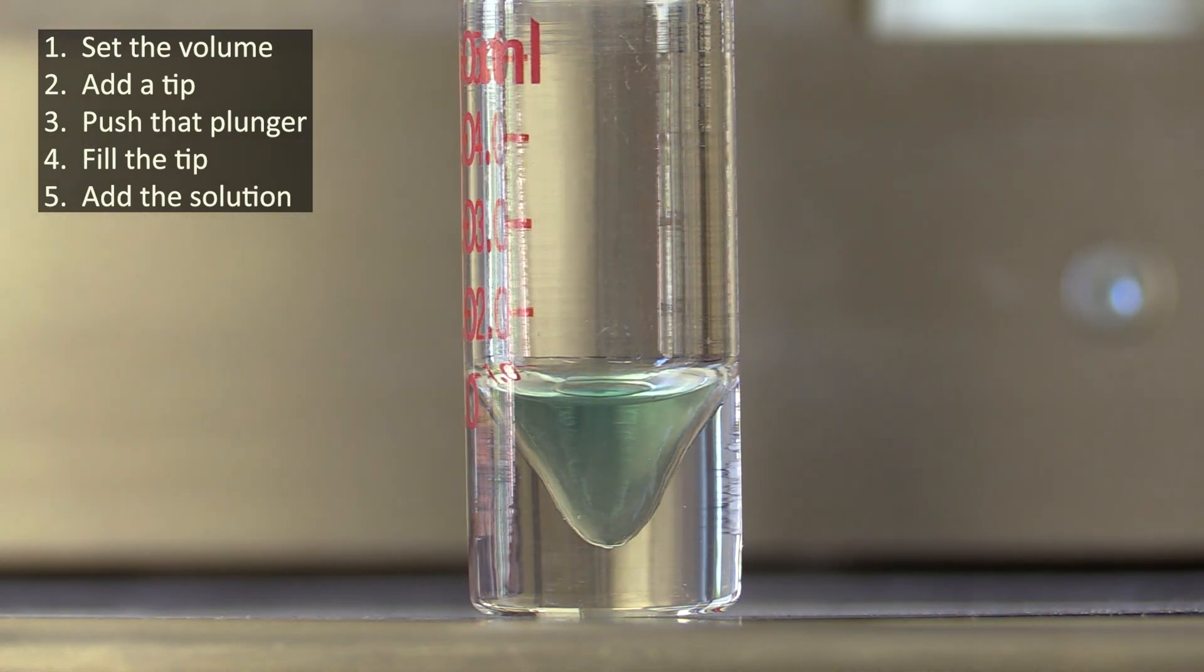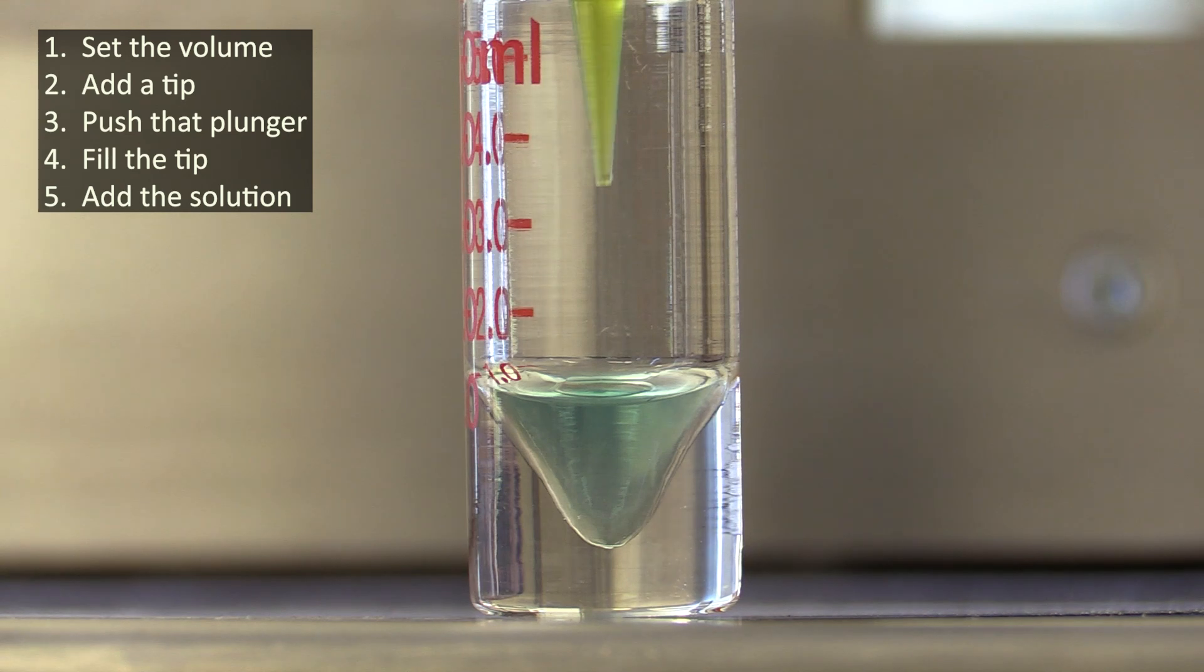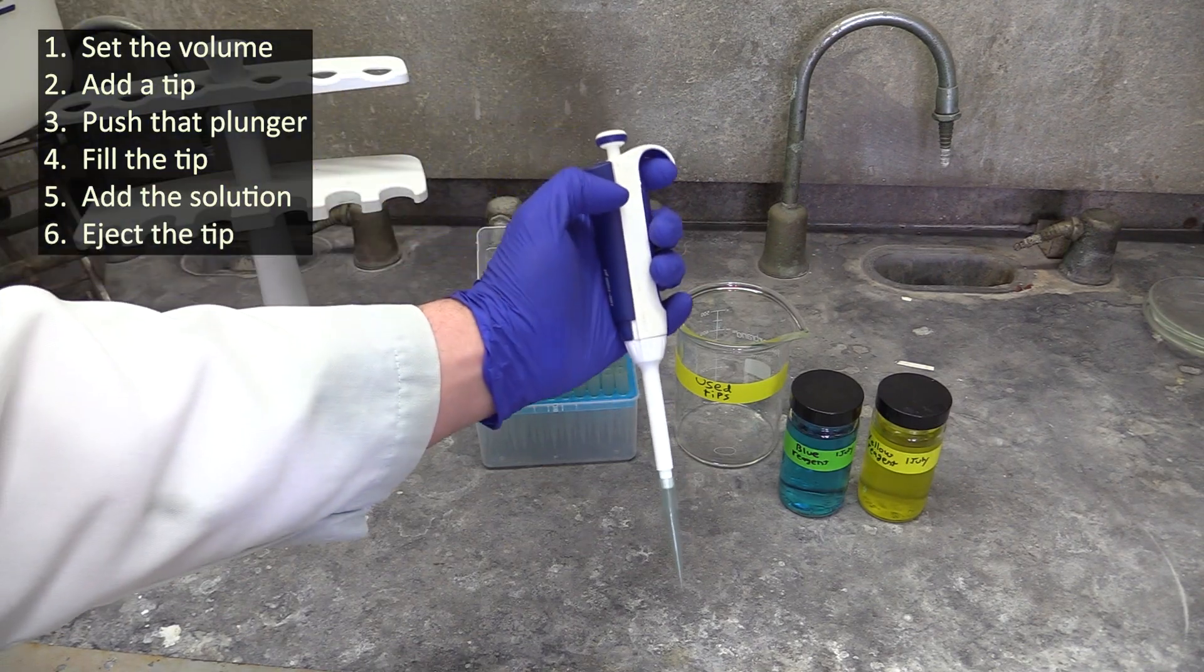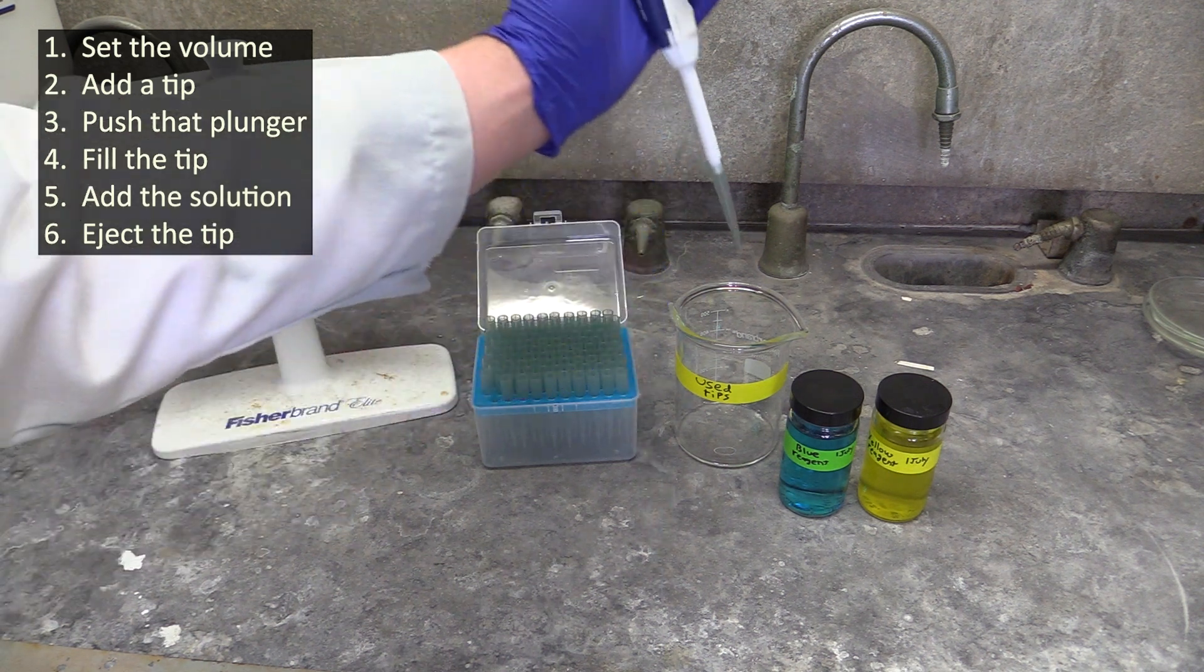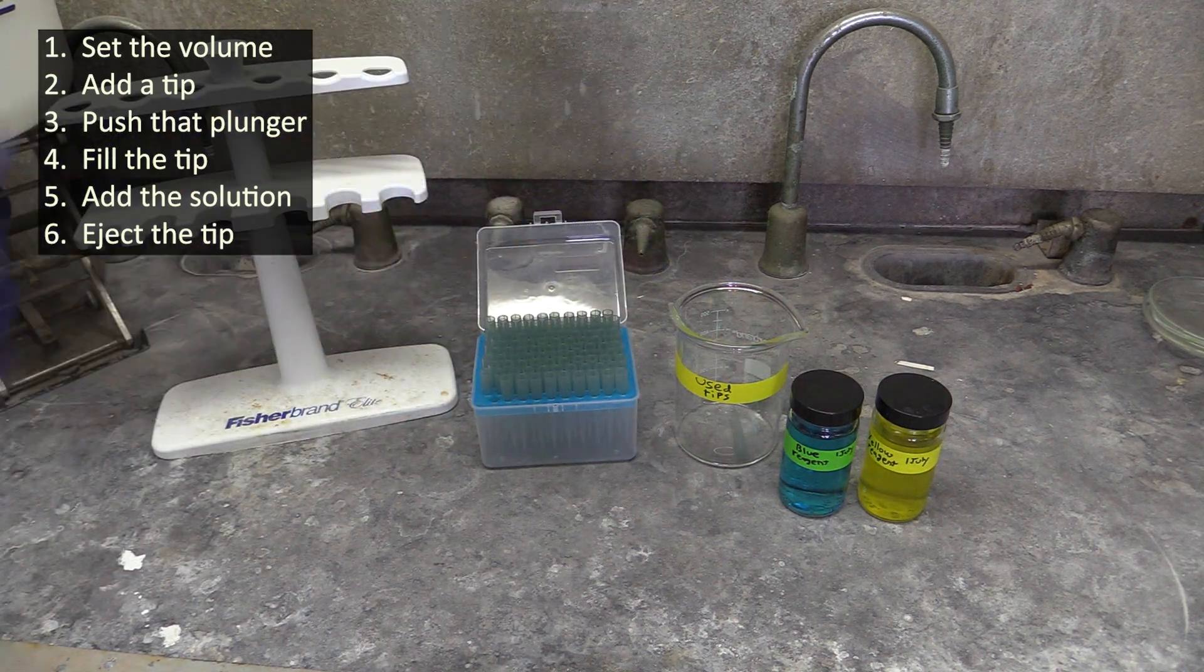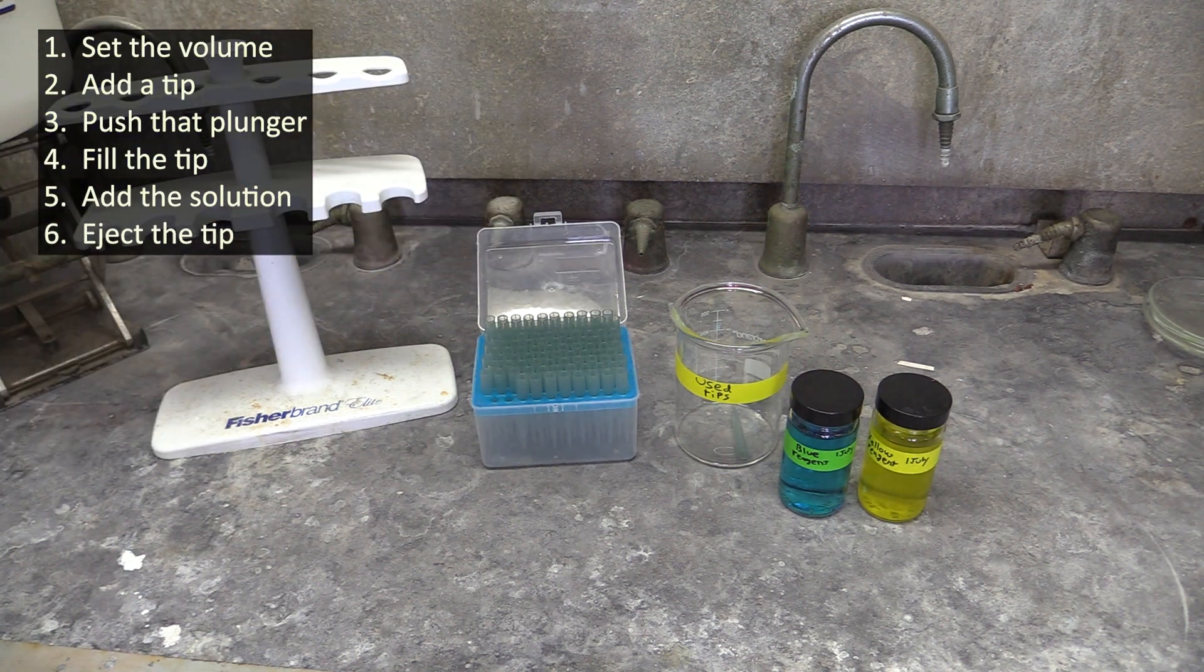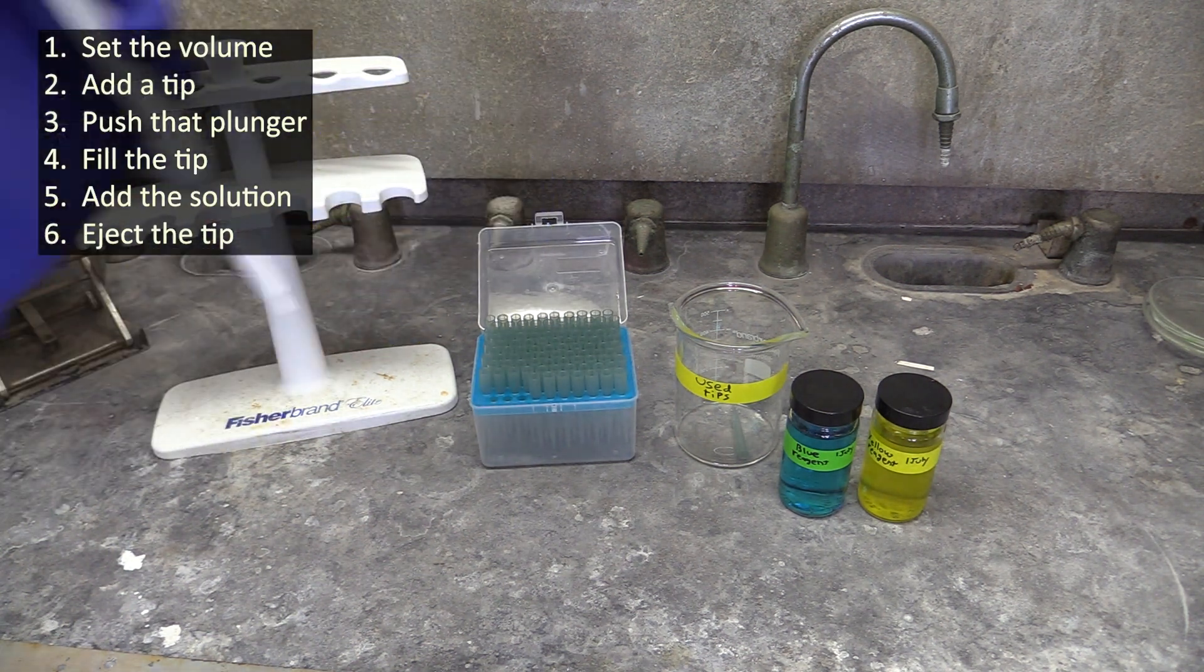If the container already has something in it, immerse the tip to just below the surface of this liquid, and like before, push the plunger down past the first stop. When you're done, use the tip ejector to shoot the tip into the appropriate waste container. If you're dispensing multiple liquids into a container, use a different tip for each one so you don't cross-contaminate your reagents.